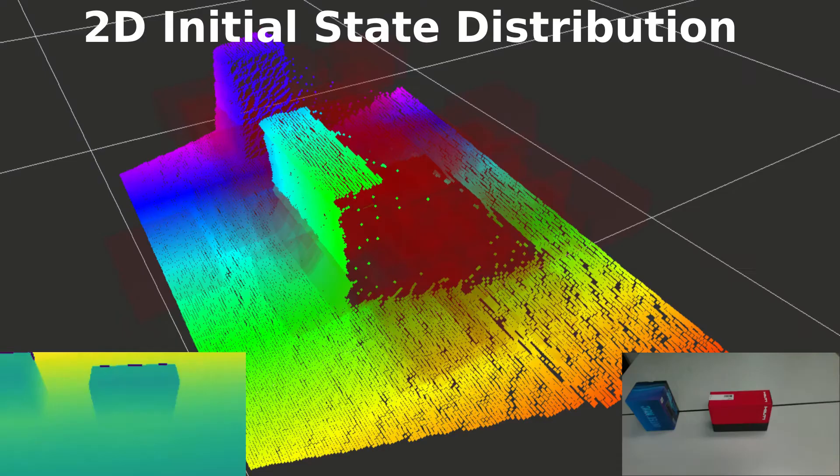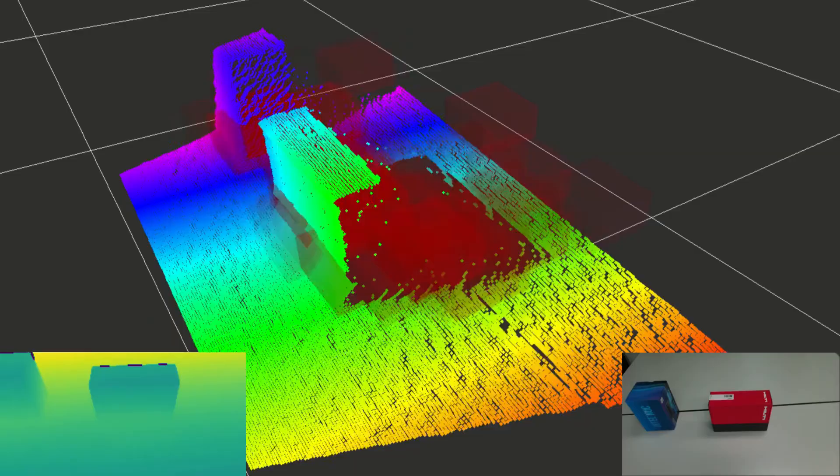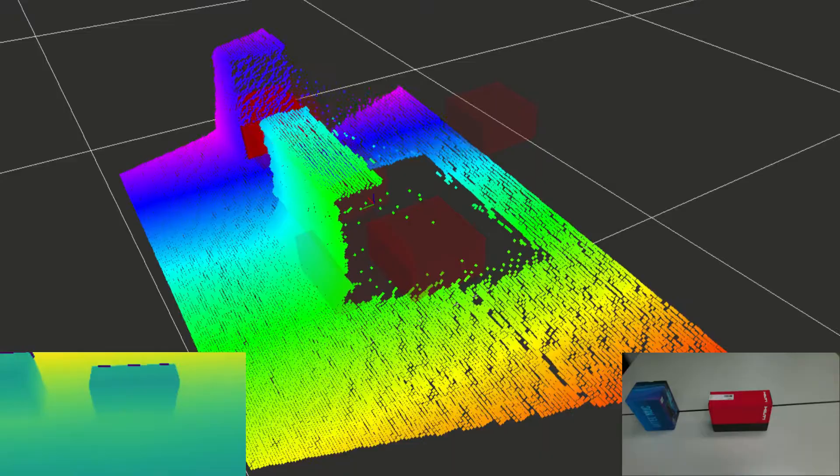We repeat the same experiment, but initialize the particle filter with a two-dimensional distribution for the object position. Again, the filter converges to the ground truth state once the target object is visible.